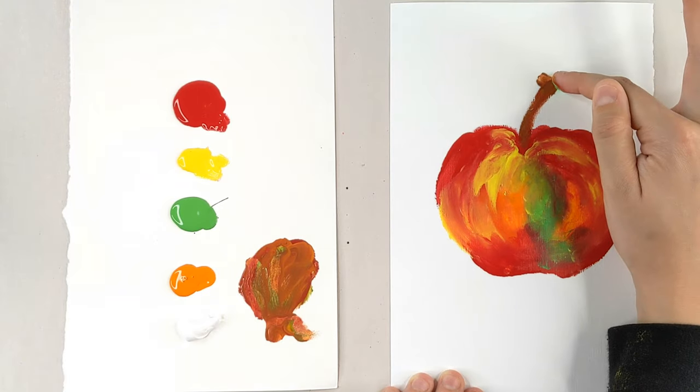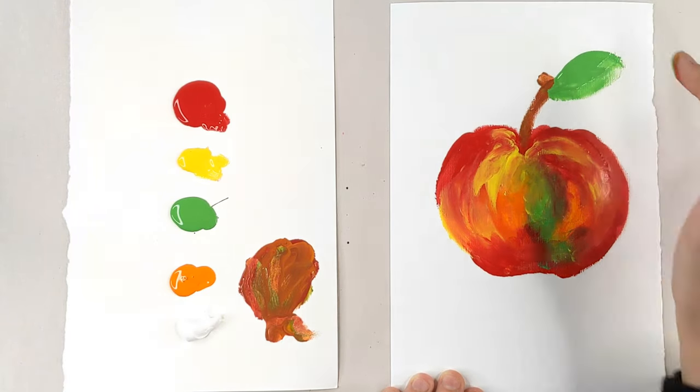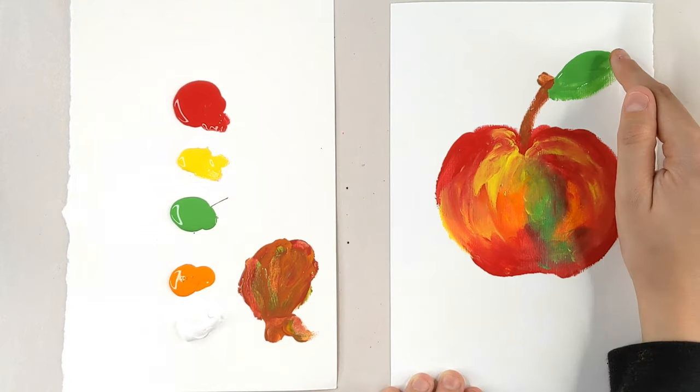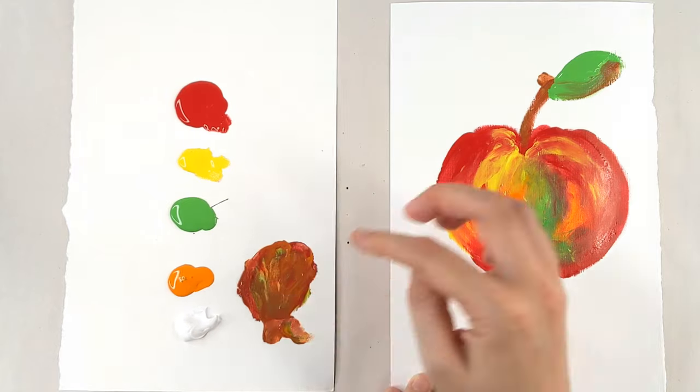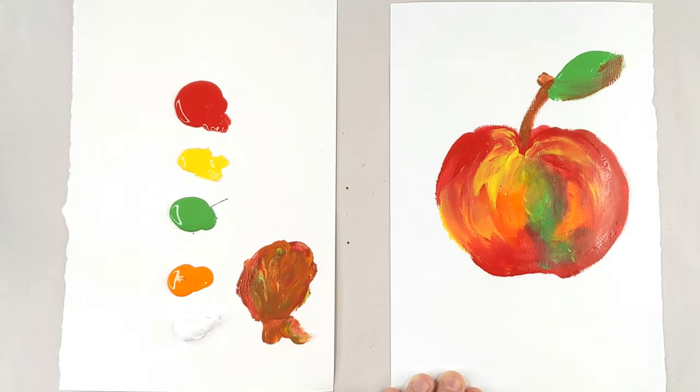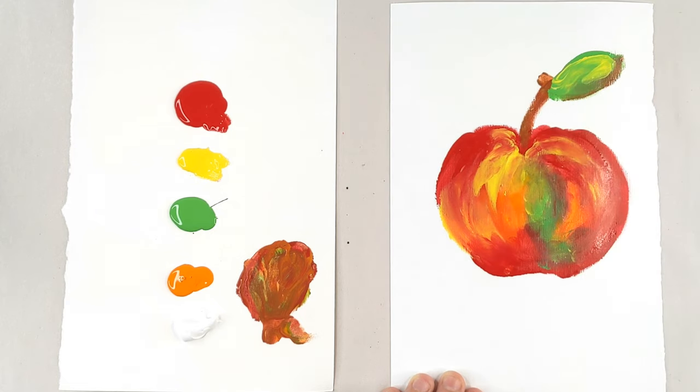Let's give it a little leaf too. Why not? Throw a little bit of that brown in underneath to add a little bit of shadow to our leaf and a little bit of yellow on top. Give it a little extra definition.